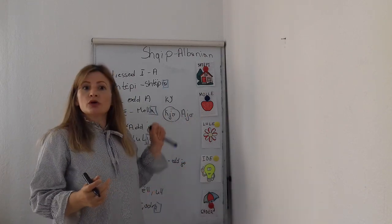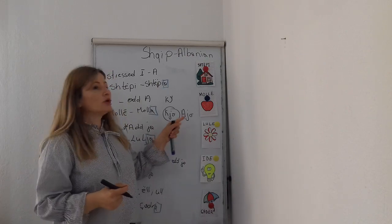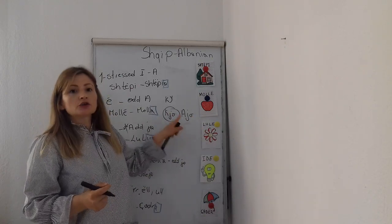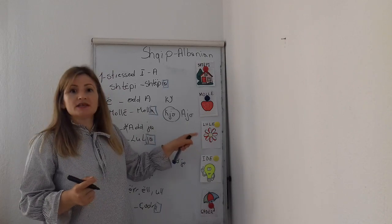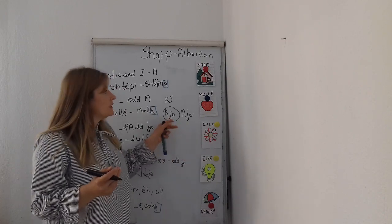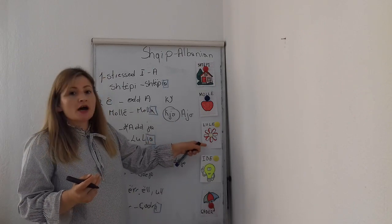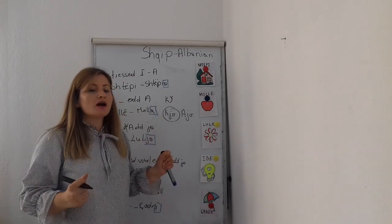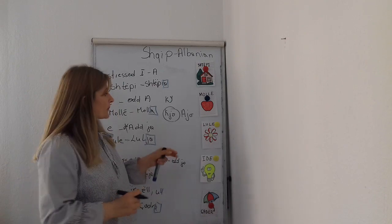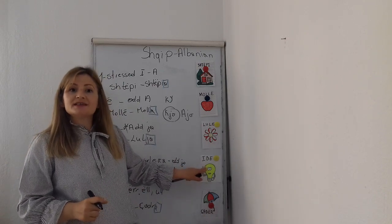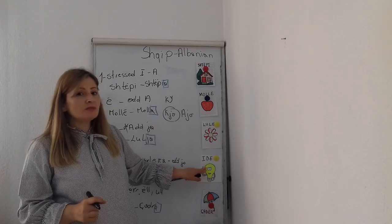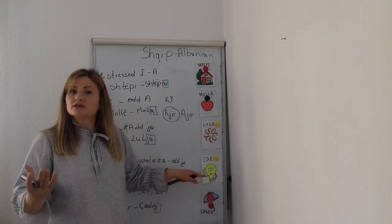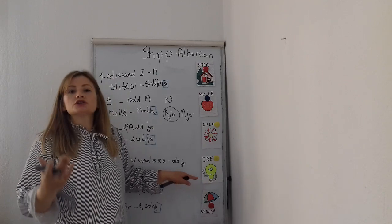Mollë is feminine. 'Kjo është mollë' — this is an apple. 'Lule' — 'Kjo është lule' — this is a flower. We say 'kjo' because Lule is feminine gender. 'Ide' — 'Kjo është ide' — this is an idea — or if the idea is far, 'Ajo është ide,' meaning that is a good idea.